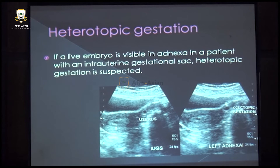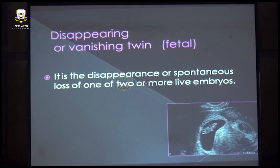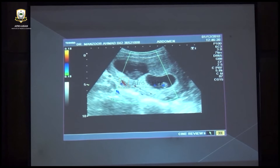Another fetal cause of vaginal bleeding is multiple pregnancy where one fetus is vanishing. In this twin pregnancy, one fetus is normal while the other is dead, producing vaginal bleeding. The live fetus shows cardiac activity while the dead fetus does not. Vanishing twin in multiple pregnancies will also be responsible for vaginal bleeding.